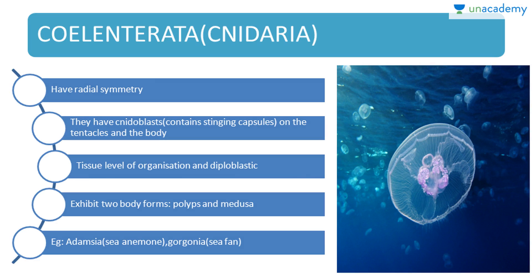Second is Coelenterata, also known as Cnidaria. They have radial symmetry and possess cnidoblasts containing sting capsules on the tentacles and body — hence the name Cnidaria. They have tissue level of organization, are diploblastic, and exhibit two body forms: polyps and medusa. Example: Adamsia (sea anemone) and Gorgonia (sea fan).